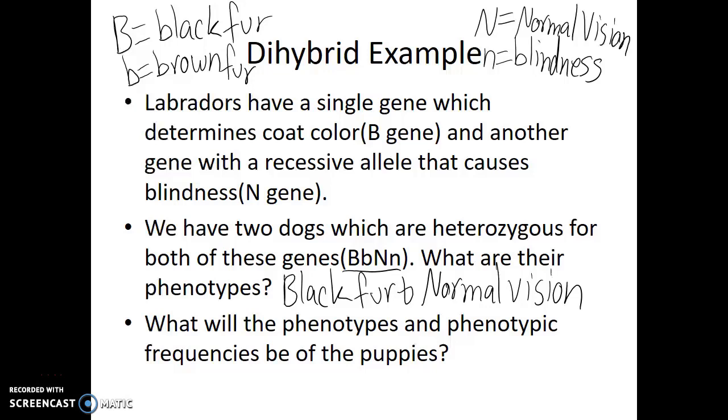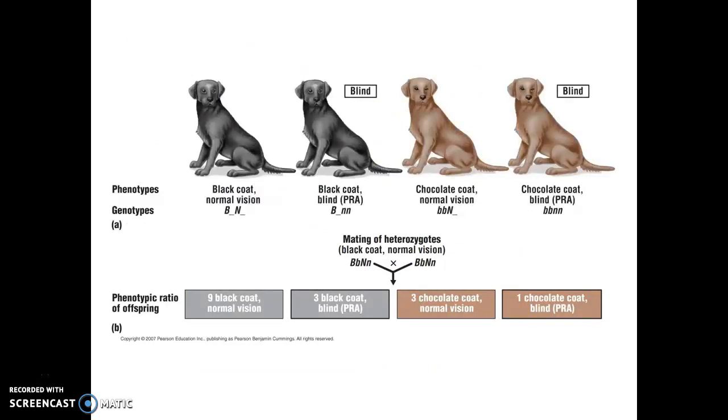If both of these dogs are used as the parents, and again looking at them, they would just look like normal black labs. You wouldn't be able to tell anything about them. What would we expect the phenotypes and phenotypic frequencies of the puppies to be? Well, this goes exactly back to that type of Punnett square which we had just made. And what that Punnett square would tell us is that most of the puppies, more than half of them, they would have black coats and normal vision. But we would get some puppies who had black coats and were blind, some puppies who had brown coats and normal vision, and the least likely result would be puppies with brown fur and who were blind.